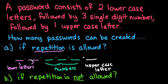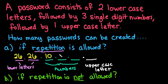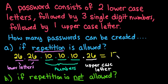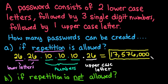What's going to change is whether repetition is allowed or what other stipulations are imposed. Since I can select two lowercase letters with repetition allowed, I have 26 choices for the first and 26 for the second. I have 10 choices for each of the three numbers, and 26 choices for the uppercase letter. Multiplying out: 26 × 26 × 10³ × 26 gives 17,576,000 different passwords.